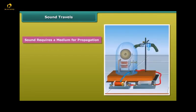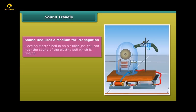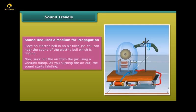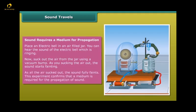Sound requires a medium for propagation. Place an electric bell in an air filled jar. You can hear the sound of the electric bell which is ringing. Now suck out the air from the jar using the vacuum pump. As you suck the air out, the sound starts fainting. As all the air sucked out, the sound fully faints. This experiment confirms that a medium is required for the propagation of sound.